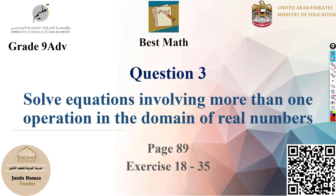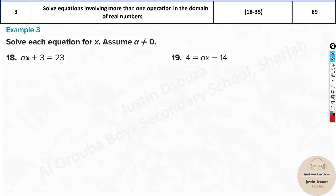Moving on to the third question: solving equations involving more than one operation. You have to do many steps in the domain of real numbers, but the important thing is there are two variables here — a, which is unknown, and x, which is also unknown — plus 3 equals 23. We need to solve for x, and a cannot be equal to 0, because if it is, the equation is nullified. So a is any real number other than 0.